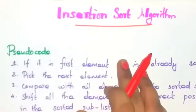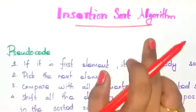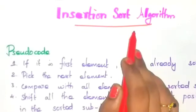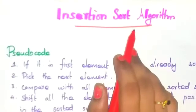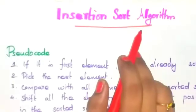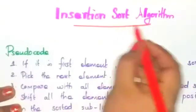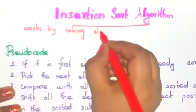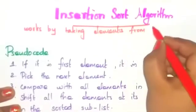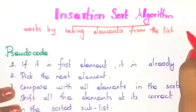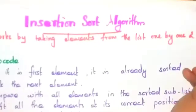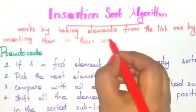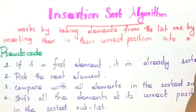Hi students, let us see the next sorting technique: insertion sort algorithm. This insertion sort algorithm is a simple algorithm. It takes elements one by one from the unsorted list and inserts those elements in their correct position in the sorted list. This algorithm works by taking elements from the list one by one and inserting them in their correct position into a new sorted list.